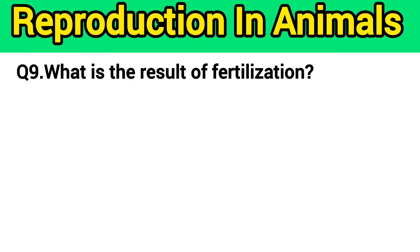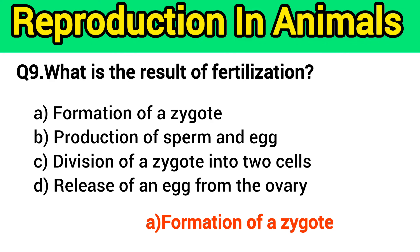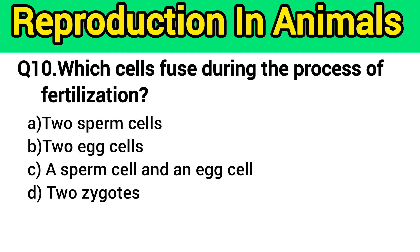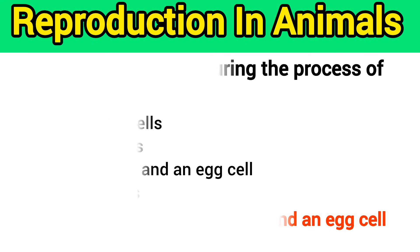Question number 9: What is the result of fertilization? The right answer is option A — formation of a zygote. Question number 10: Which cells are fused during the process of fertilization? The right answer is option C — a sperm cell and an egg cell.